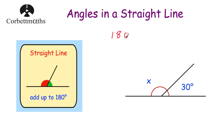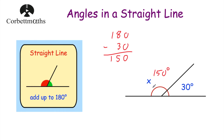So if we take our 180 degrees and subtract 30 degrees, what's left will be x. 0 take away 0 is 0, 8 take away 3 is 5, and 1 take away 0 is 1. So that means that x is 150 degrees. And if we wanted to check our answer, we could take 150 and add 30, and 150 plus 30 is 180. So the angle x is 150 degrees.